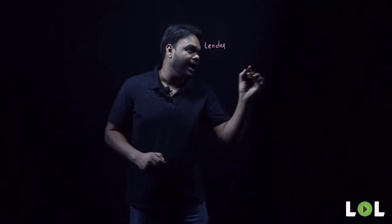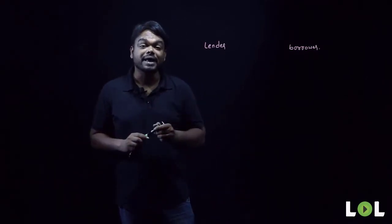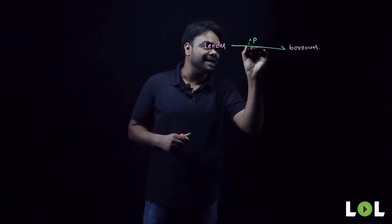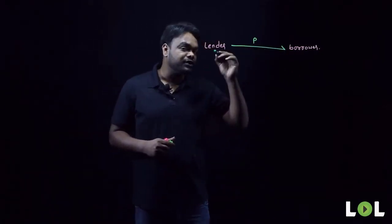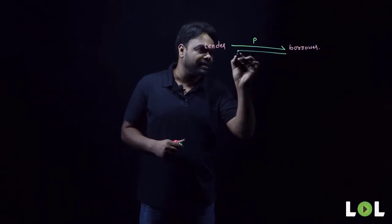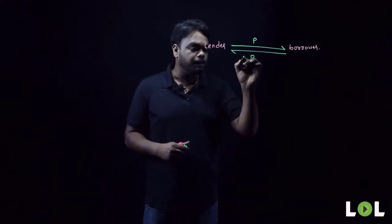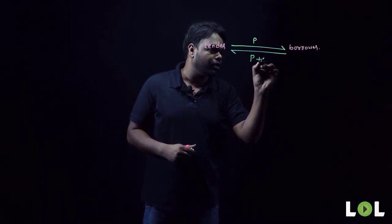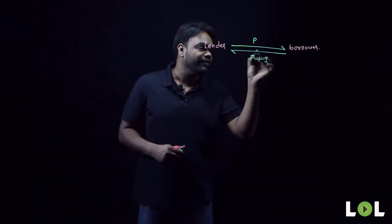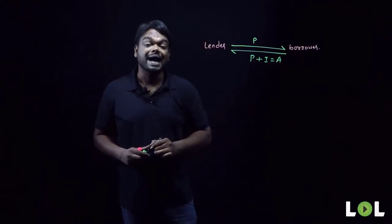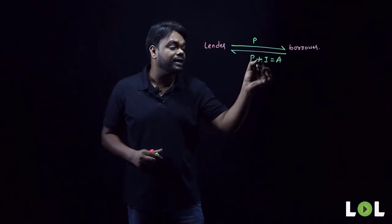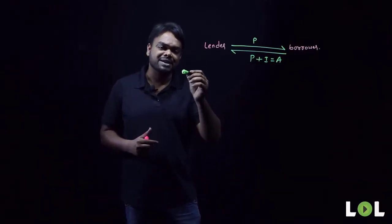There is a lender and a borrower. The lender gives a certain amount of money to the borrower, and we call that money the principal. After a certain period of time, the borrower returns the money to the lender along with some extra money, which we call interest. Together, these two — principal and interest — are called the amount. Why does the borrower pay that extra money? It is just like house rent.